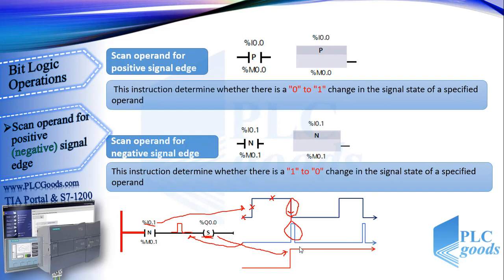As you know, the CPU runs its program, then updates its output, stores its input, and runs its program again — continuing the cycle until stopped. So in this program, when a negative signal edge is detected at I 0.1, this instruction sets its output to 1 for one program cycle. In all other cases its output has the state 0.